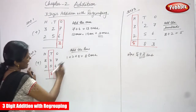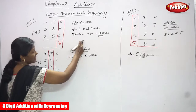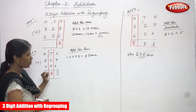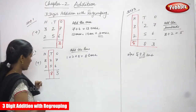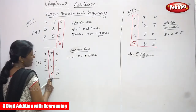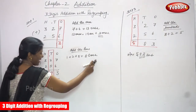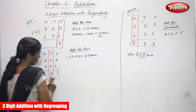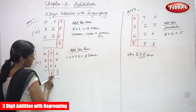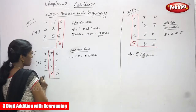Step two — add the tens. I've written the three in the ones place. The one ten is the carryover that goes to the tens place. Now I add the tens: one plus two plus five. One plus two is three, three plus five is eight. So eight tens — I've highlighted this in red. There is no carryover, so just write eight here. Step two is over.